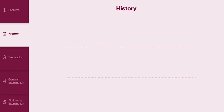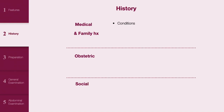History: ensure to obtain a medical history, obstetric history, family history and social history. On medical history, ask about known conditions, medications and allergies, as well as symptoms relating to discharge, bleeding or dysuria.